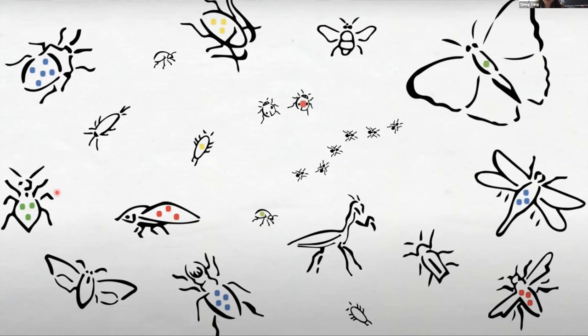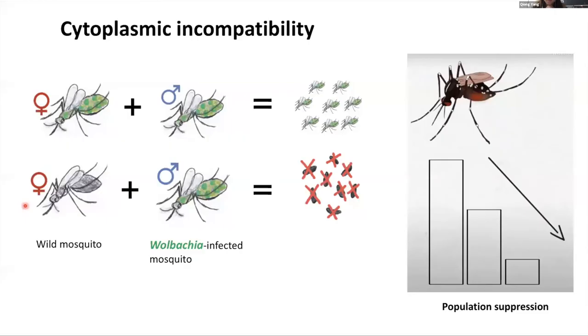For example, almost all aphids require a primary endosymbiont, Buchnera, that provides nutrients not obtained in sufficient quantities from plant phloem. In addition, aphids can also be infected with one or more additional bacteria called secondary endosymbionts. Although not generally required for survival and reproduction, those secondary endosymbionts exert diverse effects on the host.